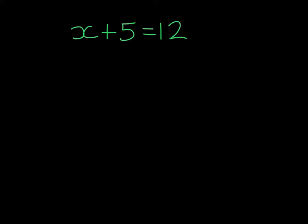We start off by examining our equation and asking ourselves what is happening to X. In this case, we are adding 5. So the inverse operation of adding 5 will be to subtract 5, and we will do this to both sides.